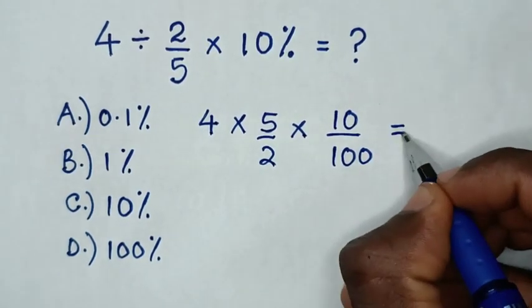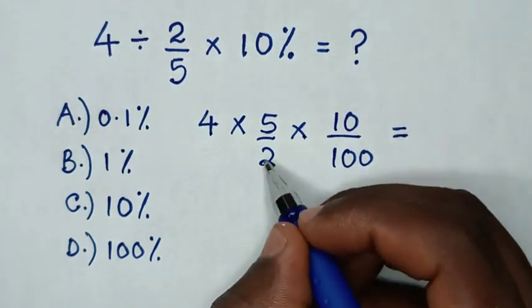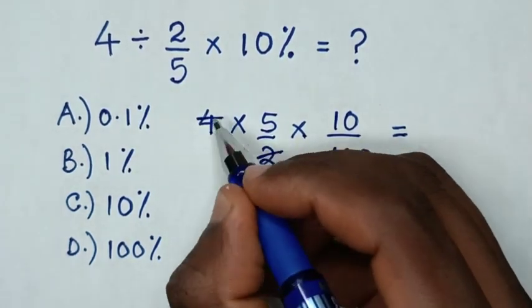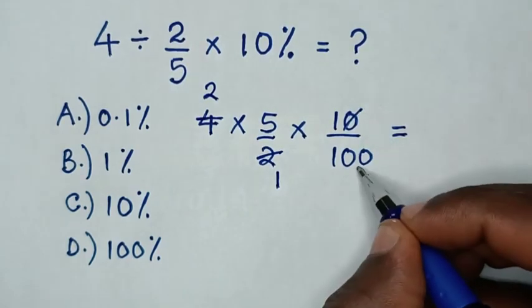Then, it will be equal to, to simplify, this 2 divided by 2 is 1, 4 divided by 2 is 2, and 0 will cancel with this 0.